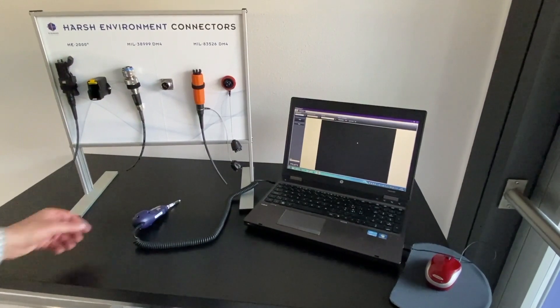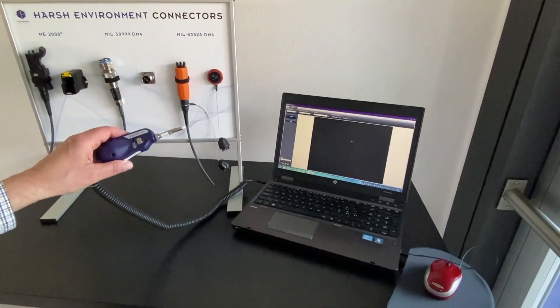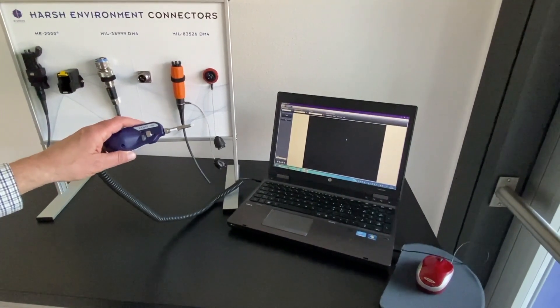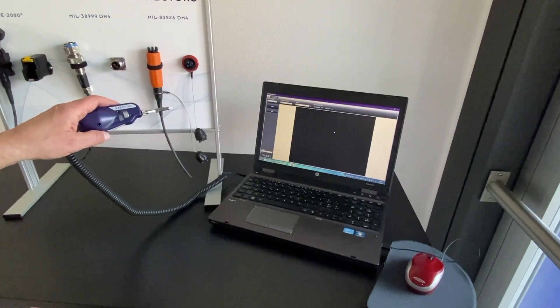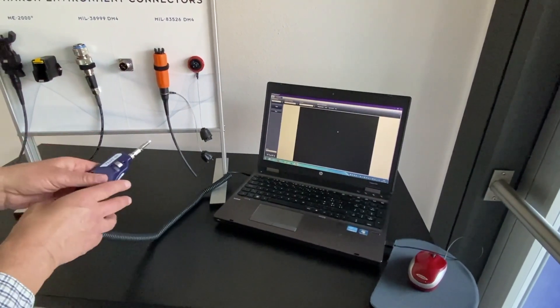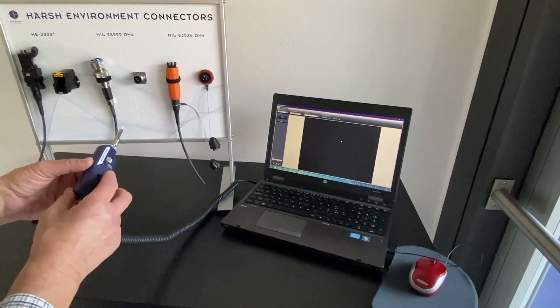What you can do as well, is you can connect the P5000i to a PC. You have to, of course, first download the program Fiber Check Pro. And, then use it as we used it on the standard microscope.